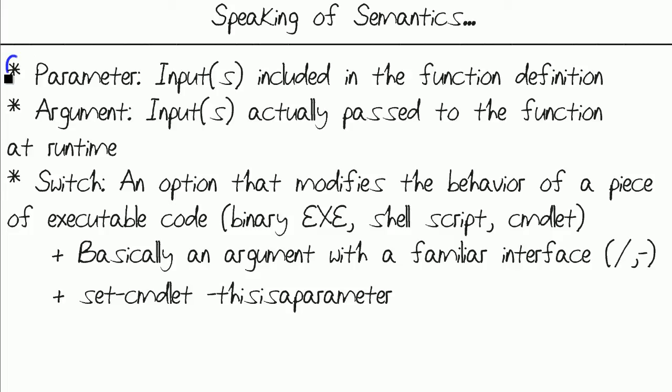My understanding is that a parameter occurs during the definition of your function. It defines your input or inputs, and depending upon the programming language, you may need to declare a data type for those parameters or not. An argument are inputs that are actually passed to the function at runtime. So arguments and parameters are intimately associated. They refer to the same data. It just deals with whether we're at design time or runtime with those inputs.